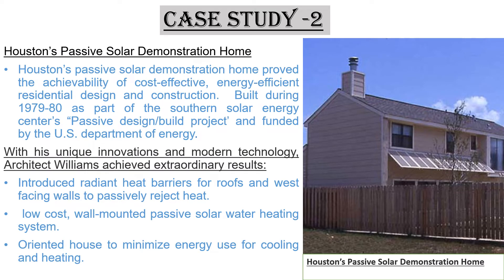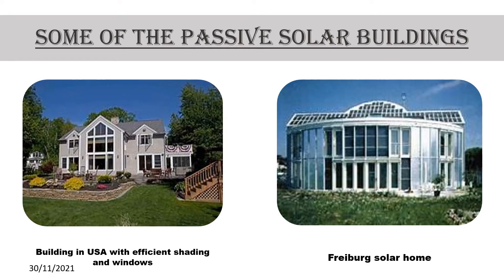Here's a second case study of the Austin Passive Solar Demonstration Home. This project proved the achievability of cost-effective, energy-efficient residential design and construction. With unique innovation and modern technology, architect William achieved extraordinary results. He introduced radiant heat barriers for roofs and west-facing walls to passively reject heat, a low-cost wall-mounted passive solar water heating system, and oriented the house to minimize energy used for cooling and heating.